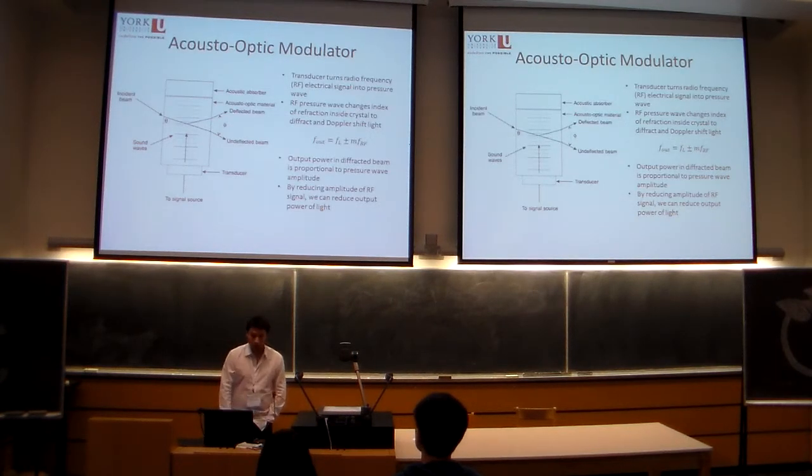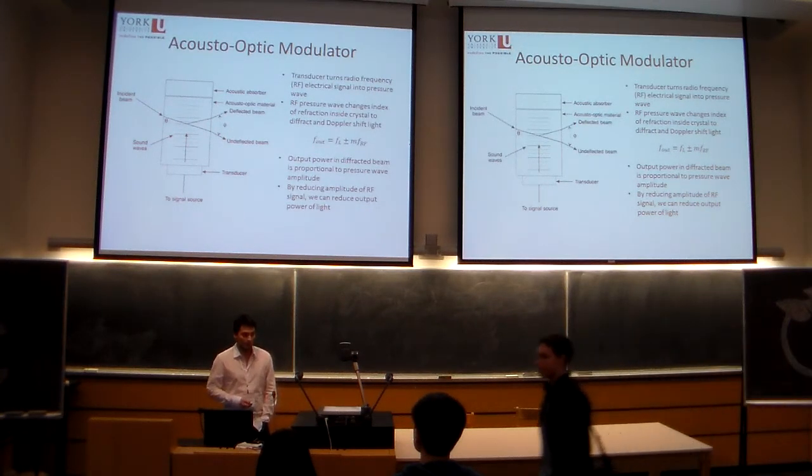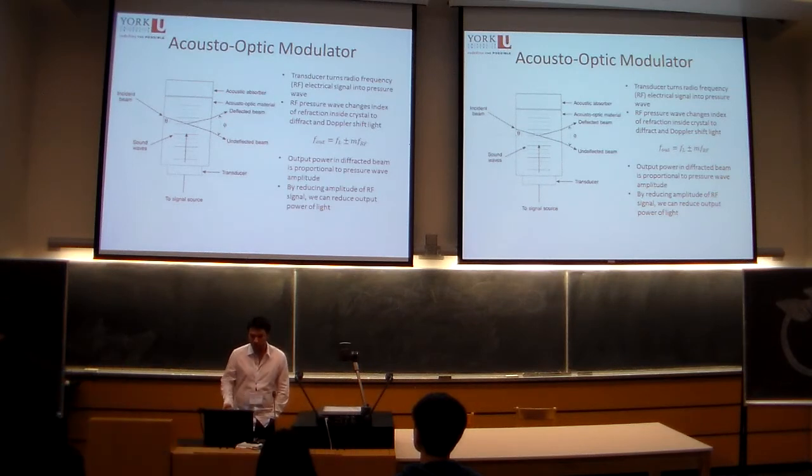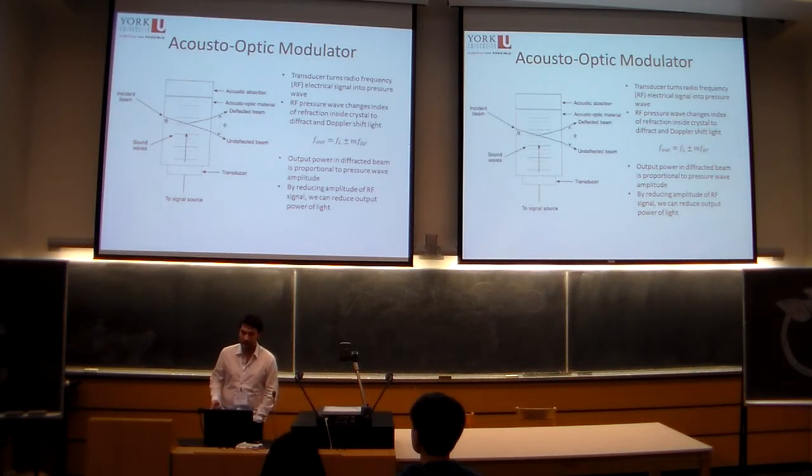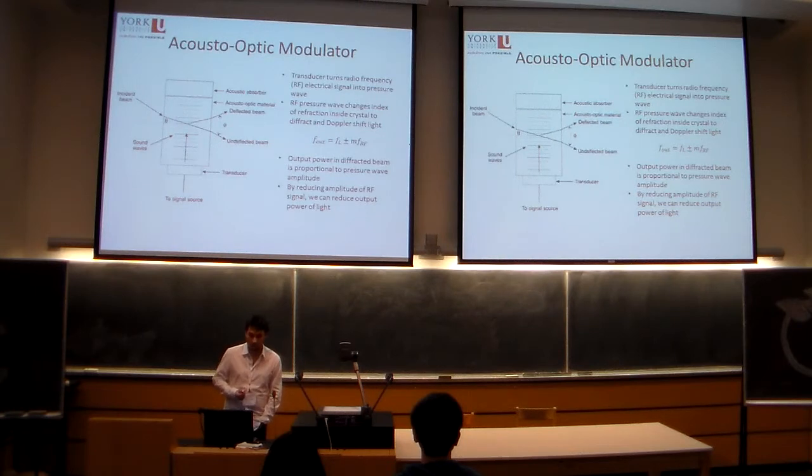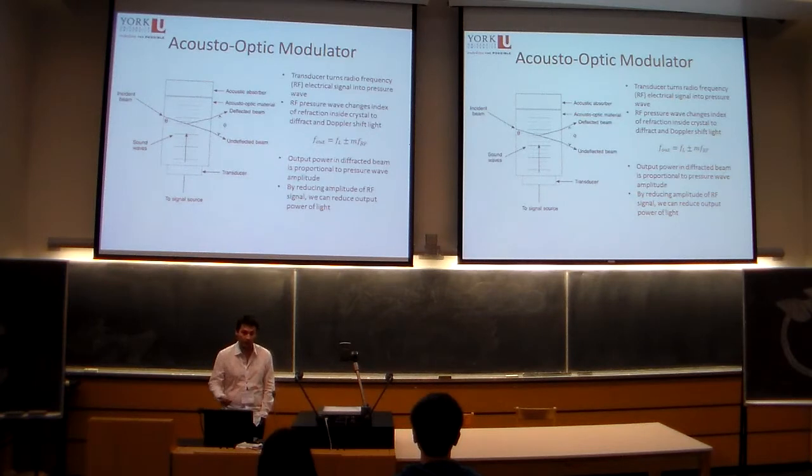An acousto-optic modulator is a device that takes in an RF electrical signal and through the use of a transducer, it changes it into a pressure wave within a crystal. This pressure wave changes the index of refraction within the crystal as the wave propagates, which sort of acts like a moving mirror within the crystal.